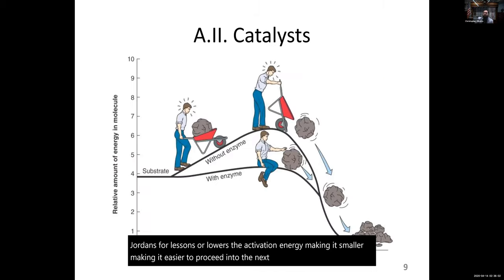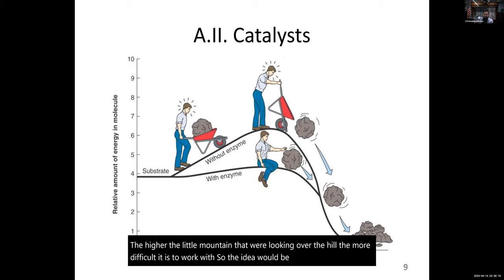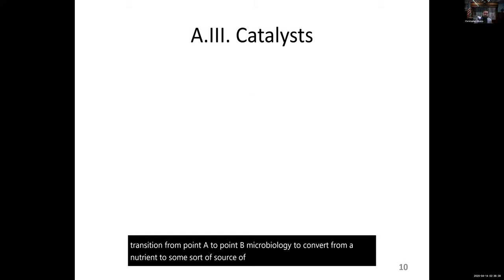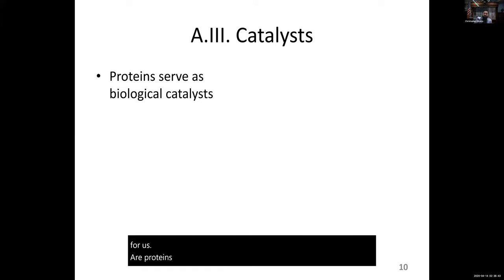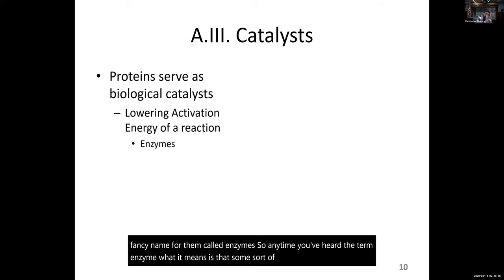An easier metaphor is trying to get somebody from point A to point B — the higher the hill, the more difficult it is. The idea is to flatten out that hill to make the work much easier. That's what catalysts do: they lower activation energy to make it easier to transition from point A to point B, which in microbiology means converting a nutrient into a source of energy — an exothermic reaction. For us, our proteins happen to be our catalysts, and we have a fancy name for them: enzymes. An enzyme is a protein able to convert a reactant into a product, typically for some chain reaction or production of energy.